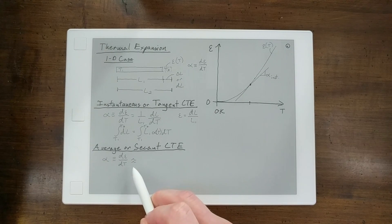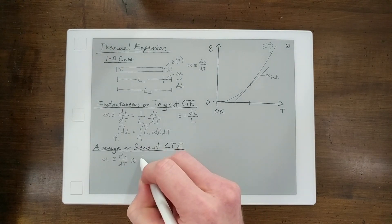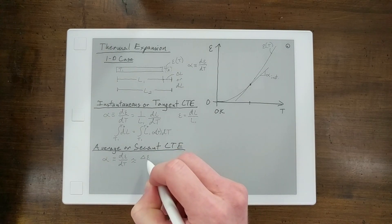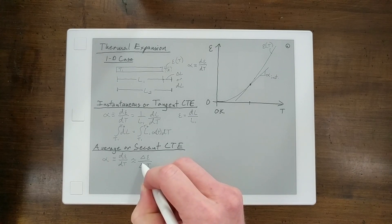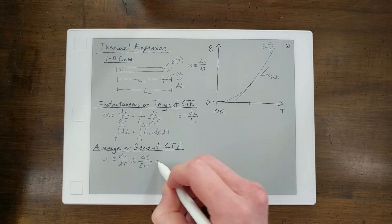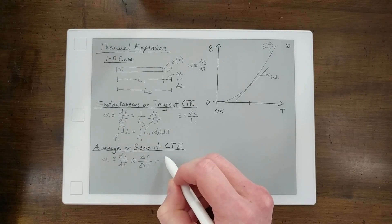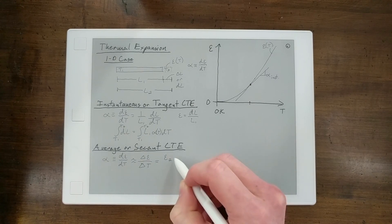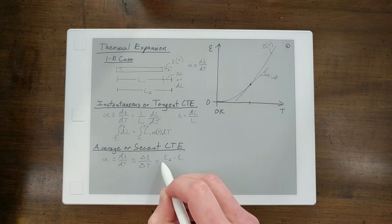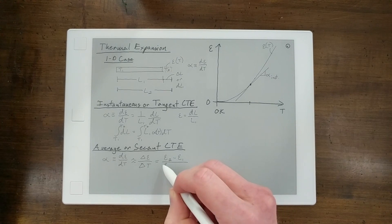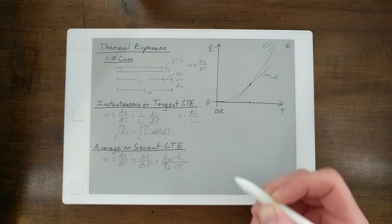And the average or secant CTE, we take that definition of strain, and we say, okay, it's approximately equal to a delta in strain divided by a delta in temperature. And so, what that would look like is the strain at temperature 2 minus the strain at temperature 1 divided by the temperature 2 minus temperature 1.